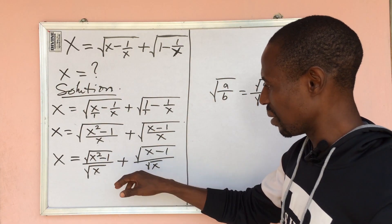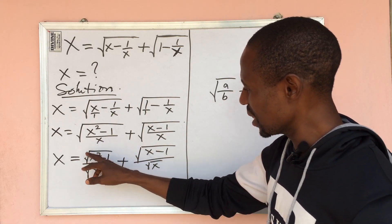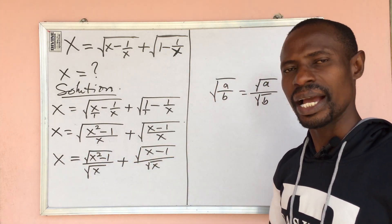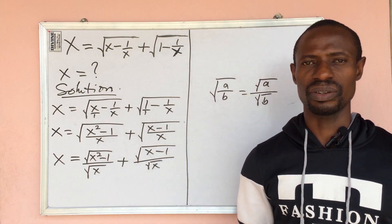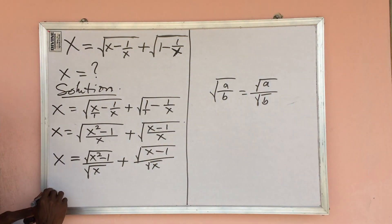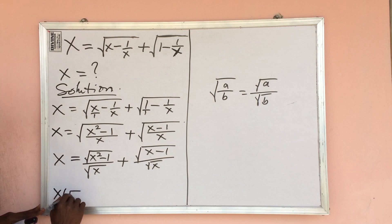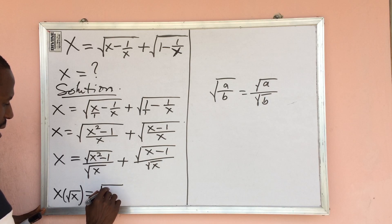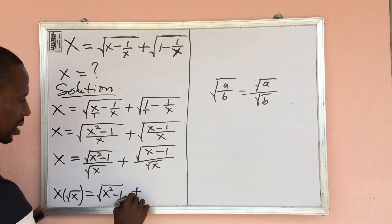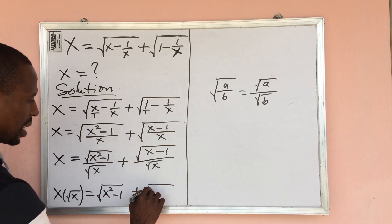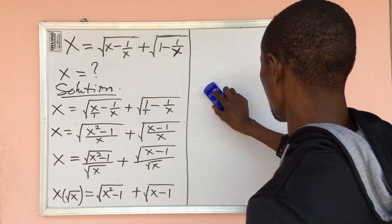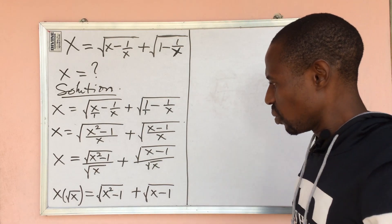This hasn't really changed anything yet. We can decide to multiply every term by the square root of x. If we do that, we get x into the square root of x — that is x times square root of x — equal to the square root of x squared minus 1, plus x minus 1.